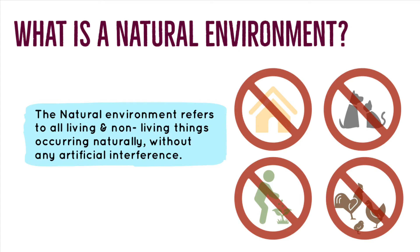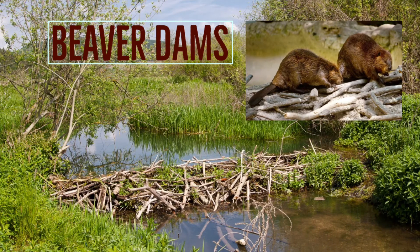Artificial interference means, for example, modifying the natural landscape and converting forest into agricultural land and planting crops. Crops are still plants, but they are artificially planted by humans, so this cannot be considered a natural environment. However, some animals do build things naturally — for example, weaver birds building dams and mound-building termites — and both of these are examples of a totally natural environment.